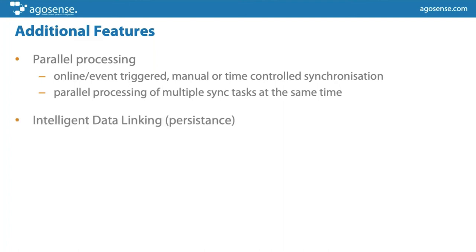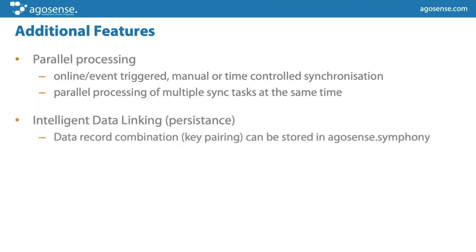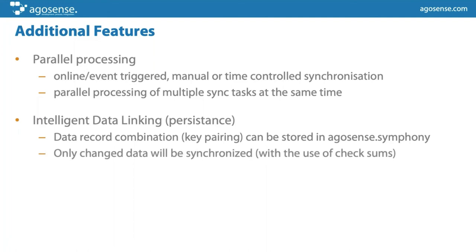The last thing I want to mention is what we call intelligent data linking. We have a database delivered with the system that stores the combination of data records — the TIAC record ID and the JIRA record ID created when we first synced them. You do not need a separate attribute in JIRA for the TIAC item number. More importantly, we also store what data has already been transferred, so we check for each transfer if data has really changed since the last run, and only synchronize data that has been touched. This significantly reduces network load and data volume.